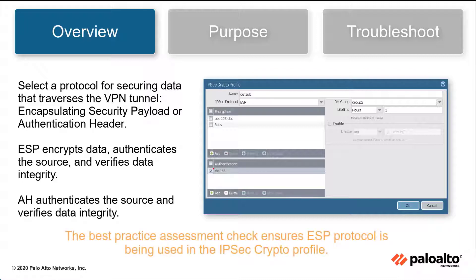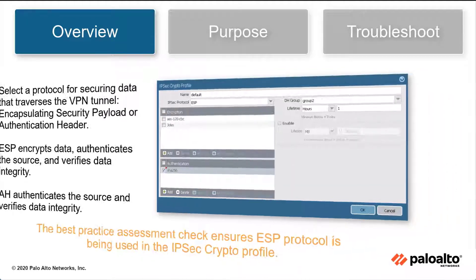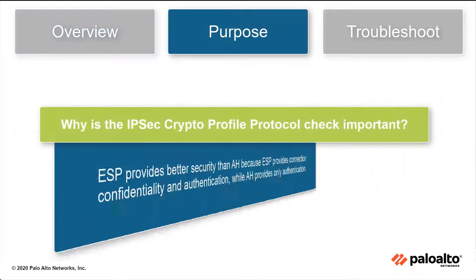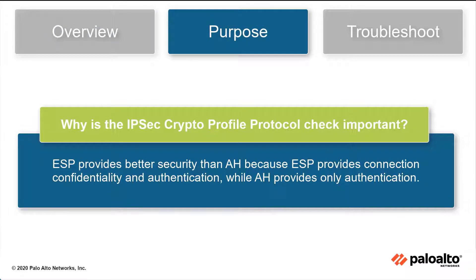The IPsec Crypto Profile Protocol best practice check ensures that the ESP protocol is being used in the IPsec Crypto Profile. ESP provides better security than AH because ESP provides connection confidentiality and authentication, while AH provides only authentication.